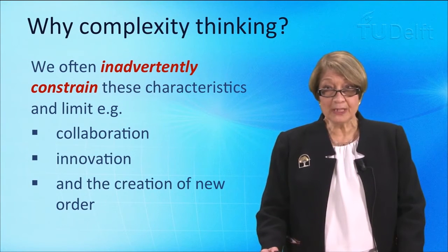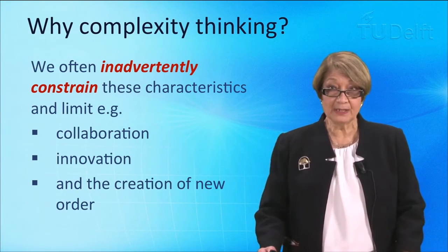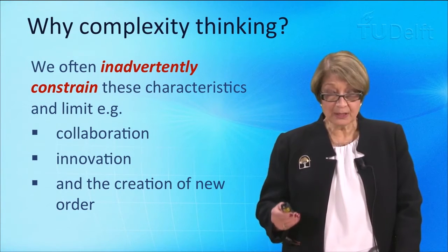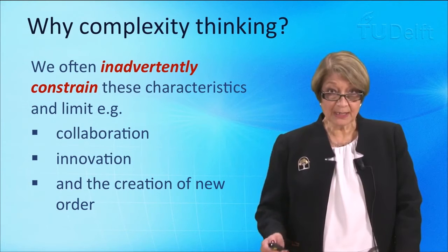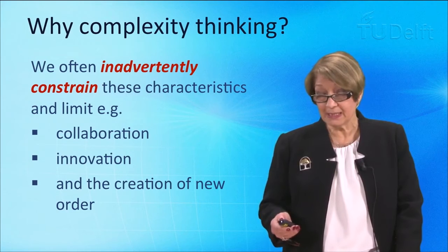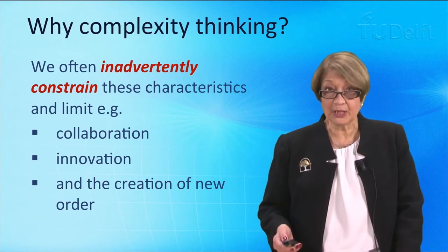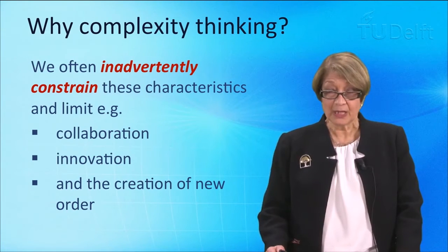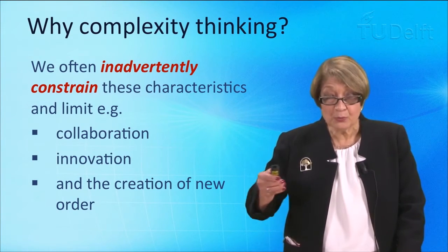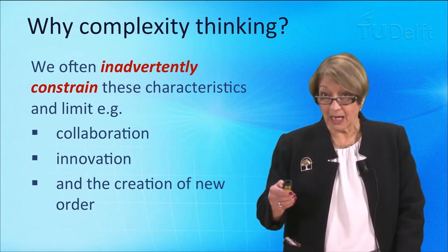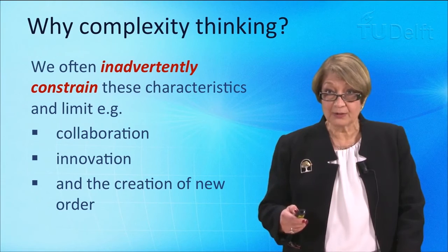First of all, we need to understand what does inadvertently constrained mean. For example, when we want to be innovative — and you remember last time I kept repeating innovation — and we do not facilitate self-organisation and exploration of the space of possibilities, then we will not actually achieve our objective. So it is how do we work with those characteristics to achieve our objectives without inadvertently constraining them.